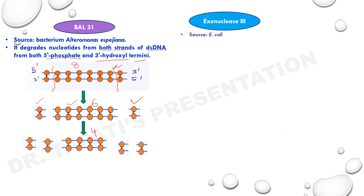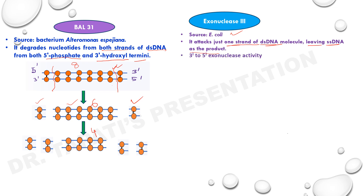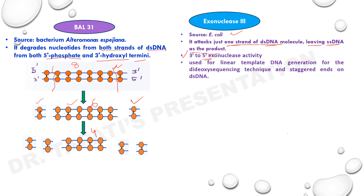The second type of exonuclease example is Exonuclease III, sourced from E. coli. It attacks just one strand of a double-stranded molecule, leaving single-stranded DNA as the product. It has 3' to 5' exonuclease activity. It is used for linear template DNA generation for the dideoxy sequencing technique and for generating staggered ends on double-stranded DNA.